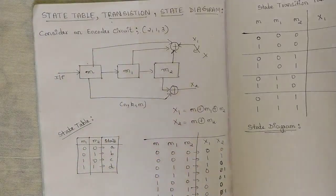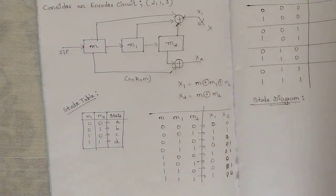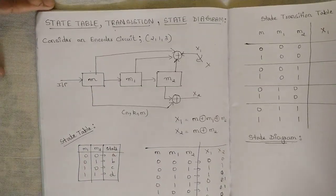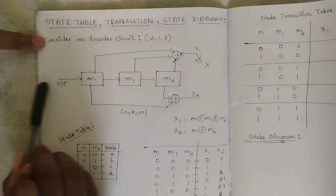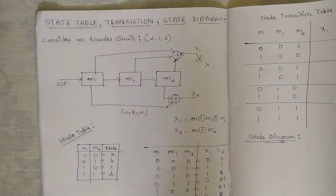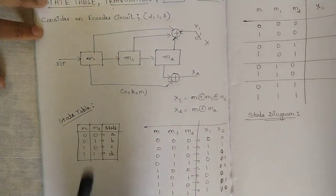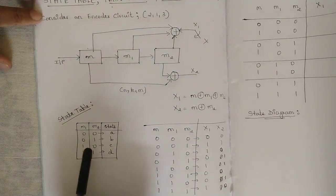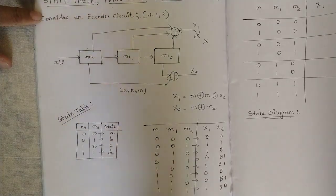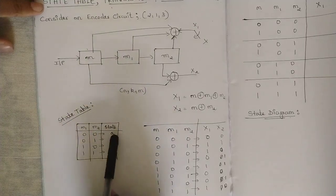Now the state table definition: we consider 2 registers, m1 and m2. The input bit m is not considered in the state table. Based on two registers we have four combinations: 00, 01, 10, and 11, and for each combination we define one state. For 00 I have defined state A, for 01 state B.